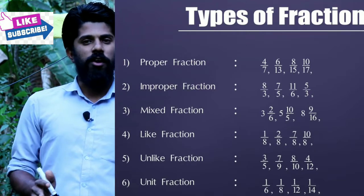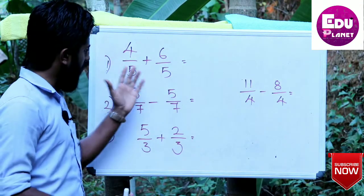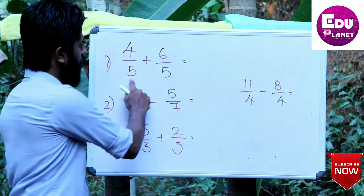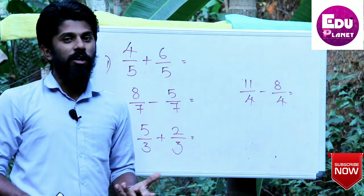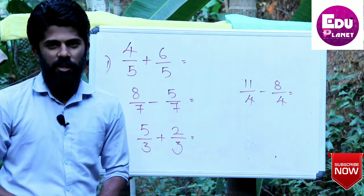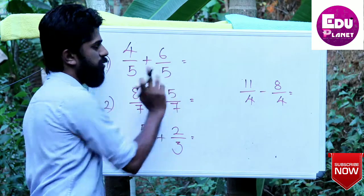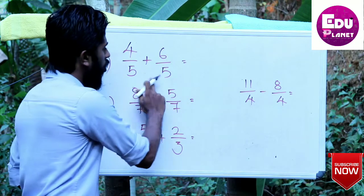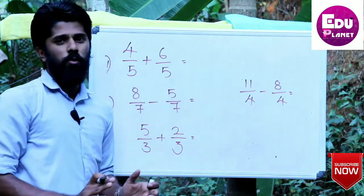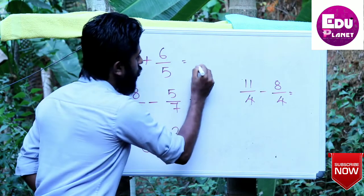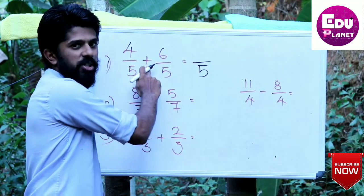We have a few questions on the board. A like fraction means the denominator is the same. So when the denominator is the same, for example 4 by 5 plus 6 by 5, since the denominators are the same, it is easier to do the addition operation directly.